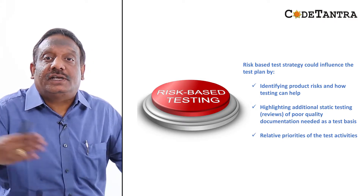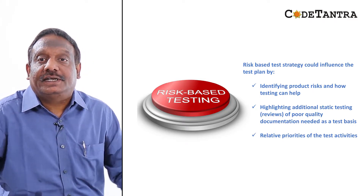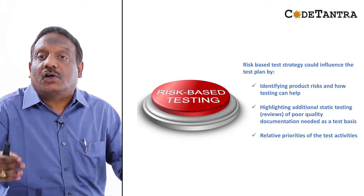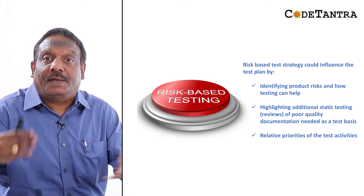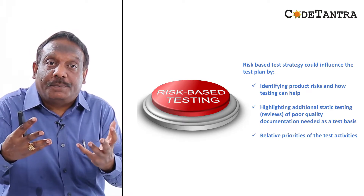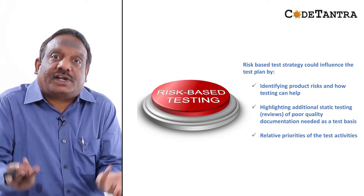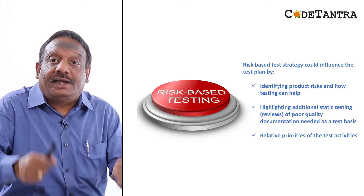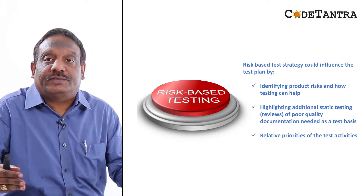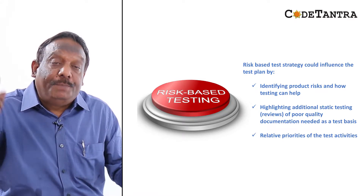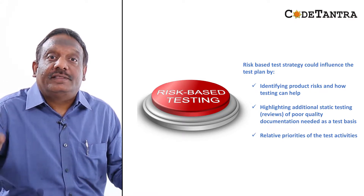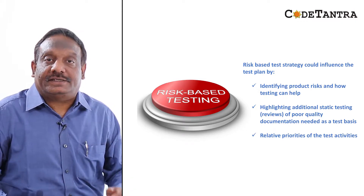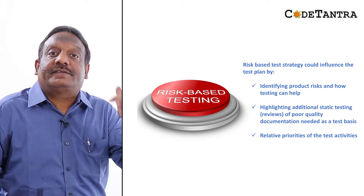An example of risk-based strategy in action is highlighting the need for additional static testing — such as reviews for poor quality documentation used as the test basis. It also involves setting relative priorities for testing activities based on the relative risks of the application under test.